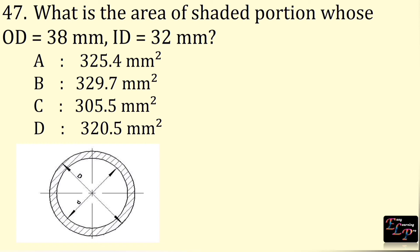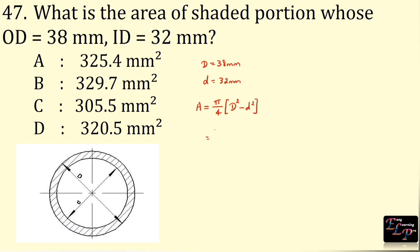What is the area of the shaded portion whose outer diameter is 38 mm and inner diameter is 32 mm? Area of a circular ring is (π ÷ 4)(D² − d²) = (3.14 ÷ 4) × (38² − 32²) = (3.14 ÷ 4) × 420 = 329.7 mm².